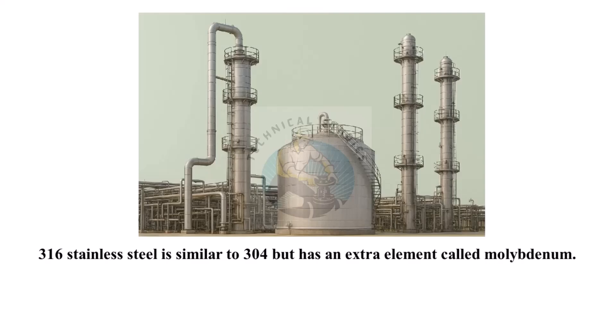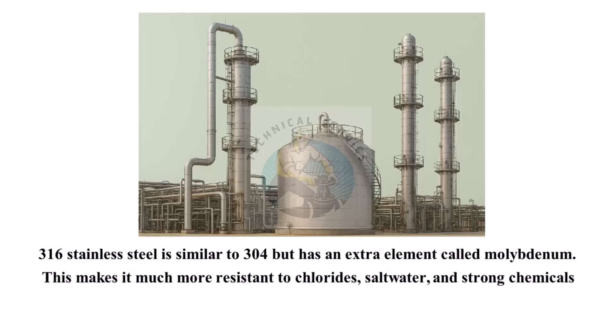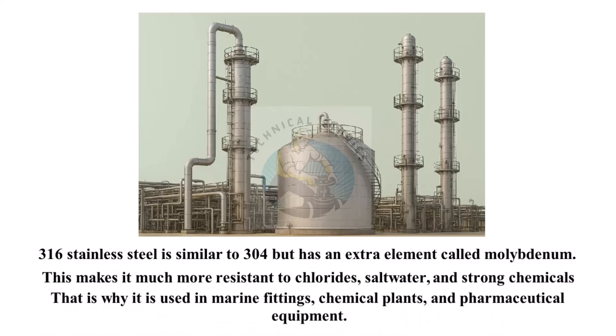316 stainless steel is similar to 304, but has an extra element called molybdenum. This makes it much more resistant to chlorides, salt water, and strong chemicals. That is why it is used in marine fittings, chemical plants, and pharmaceutical equipment.